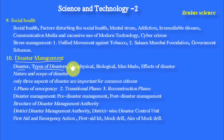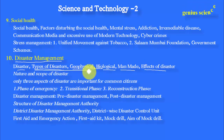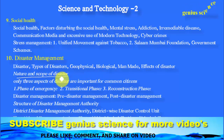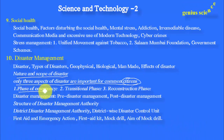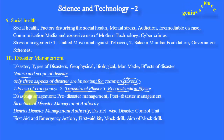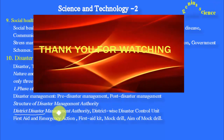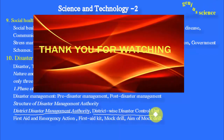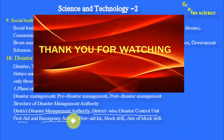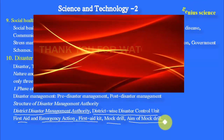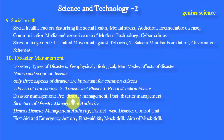The last chapter is Disaster Management. Topics include: What is meant by Disaster, Types of Disasters — Geophysical, Biological, and Manmade — and Effects of Disasters. The Nature and Scope of Disasters, and three aspects important for common citizens: Phase of Emergency, Transitional Phase, and Reconstruction Phase. Also: Pre-Disaster Management and Post-Disaster Management, Structure of Disaster Management Authority and District Disaster Management Authority, District Wise Disaster Control Unit, First Aid and Emergency Action, First Aid Kit, Mock Drills, and the Aim of Mock Drills.